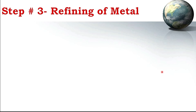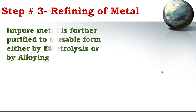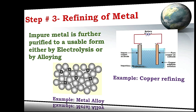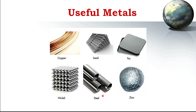After extraction of metal, in the refining step, the impure metal obtained from extraction processes is purified to a usable form either by electrolysis or by alloying. For example, copper is refined by electrolytic refining, and iron is converted into the alloy steel because it is more useful than pure iron. After these metallurgical operations we obtain useful metals which can be used all over the world.